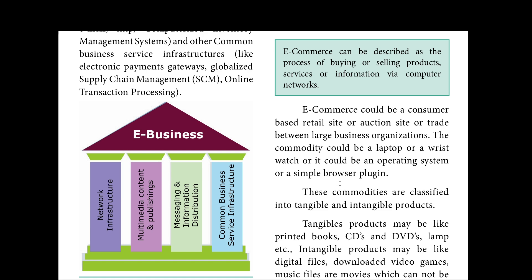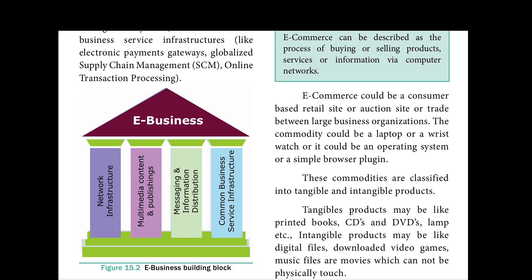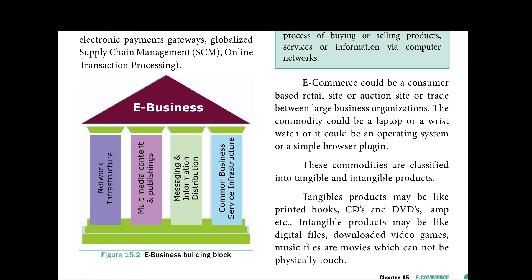The commodities in e-commerce could be a laptop or a wristwatch — physical items — or it could be an operating system or a simple browser plug-in, which are digital. These are things we utilize in our day-to-day life, both physical and digital products.